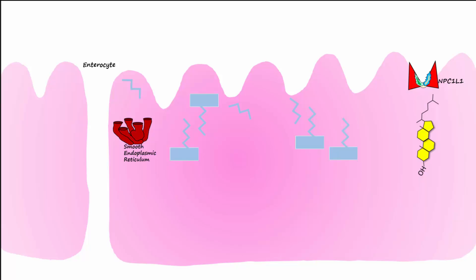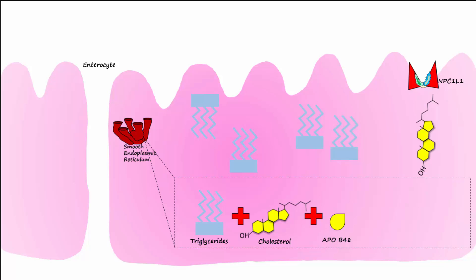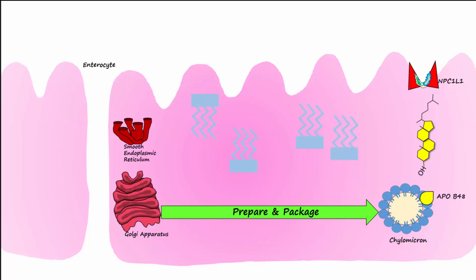Once inside the enterocyte, the smooth endoplasmic reticulum can reassemble the free fatty acids and monoglycerides back into triglycerides. The triglycerides are assembled with cholesterol and an enterocyte-produced protein called ApoB48 to form a structure called a chylomicron. The chylomicron is then packaged into a vesicle by the Golgi apparatus and leaves the enterocyte by exocytosis.